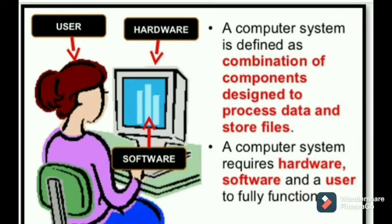A computer system is also defined as a combination of components designed to process data and store files. A computer system always requires hardware, software, and a user to fully make it functional. Let us now explore the various hardware components of a computer.